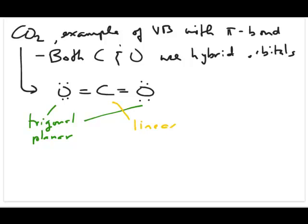With these electron geometries, we also have an associated hybrid orbital. In this case, both carbon and oxygen use hybrid orbitals. If you have a trigonal planar electron geometry, then your hybrid orbital will be sp2. So both oxygens are going to use sp2. And then for the linear carbon, you're going to have an sp hybrid orbital. What you have to do to complete this question is draw the bonding in terms of orbitals and show how many pi and how many sigma bonds you have.